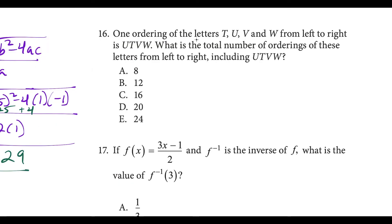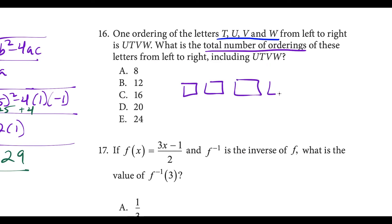Question sixteen: one ordering of letters U, T, V, W from left to right is UTVW. We want the total number of orderings. All letters are different, so we think about how many options we have for each position. For the first letter, we have 4 options; since there are no repeats, we then have 3, then 2, then 1. Multiplying: 4 times 3 is 12, times 2 is 24. So this is going to be choice E.